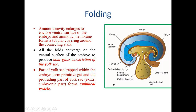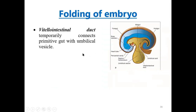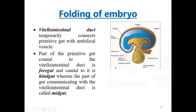The entrapped part will remain as the primitive gut, and the protruding part of the yolk sac will form the umbilical vesicle. The connecting part between the primitive gut and the umbilical vesicle is known as the vitelointestinal duct. The vitelointestinal duct temporarily connects the primitive gut to the umbilical vesicle. The part of the primitive gut cranial to the vitelointestinal duct is the foregut, caudal to it is the hindgut, and the part opposing it is the midgut.